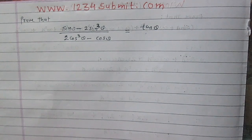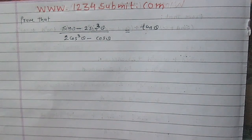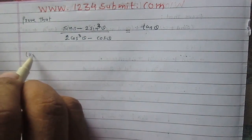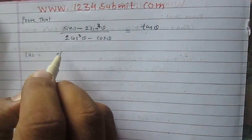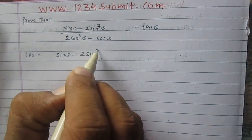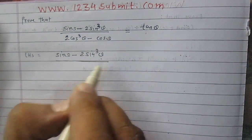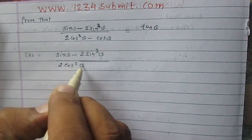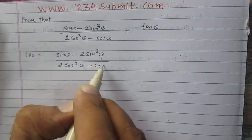Prove that sin theta minus 2 sin cube theta, whole divided by 2 cos cube theta minus cos theta, is equal to tan theta. Consider the left hand side: sin theta minus 2 sin cube theta, whole divided by 2 cos cube theta minus cos theta.